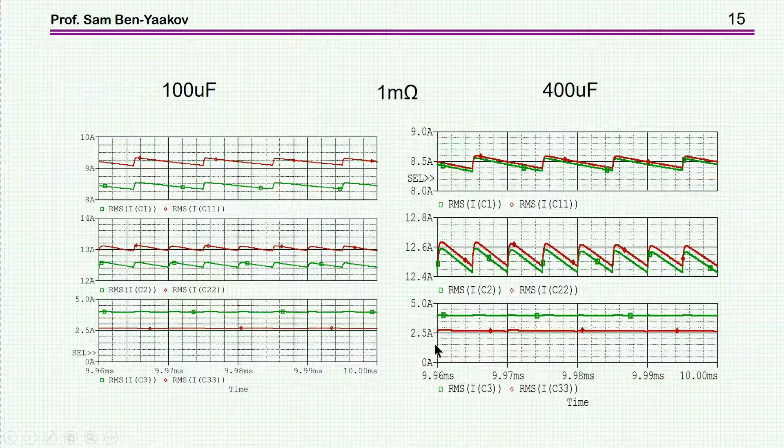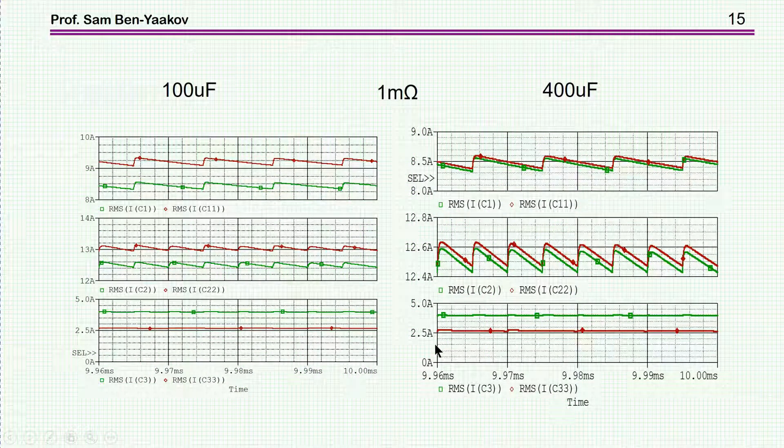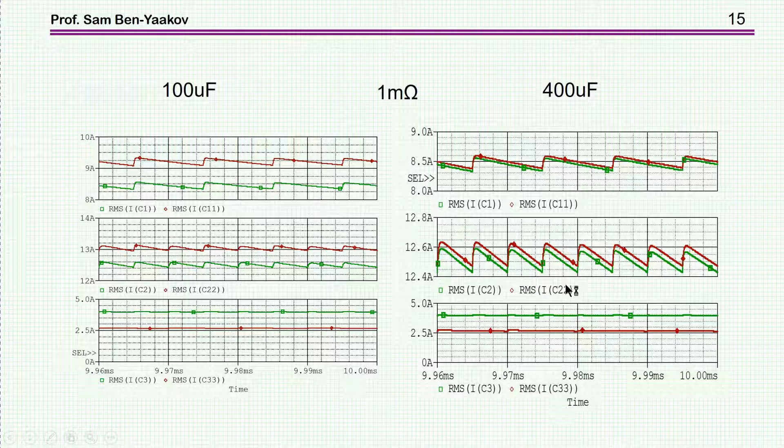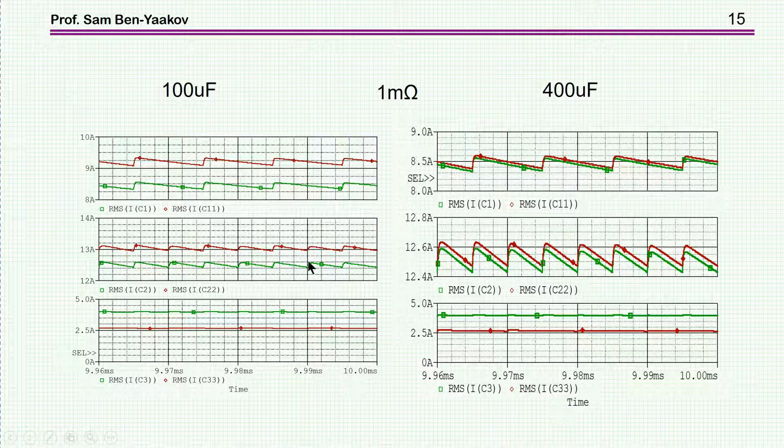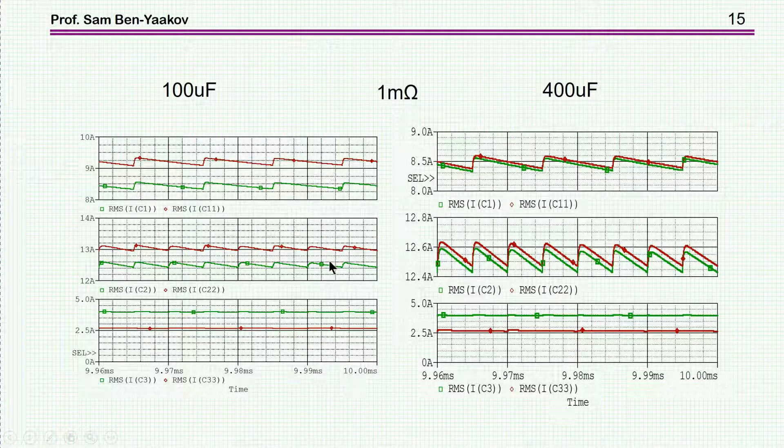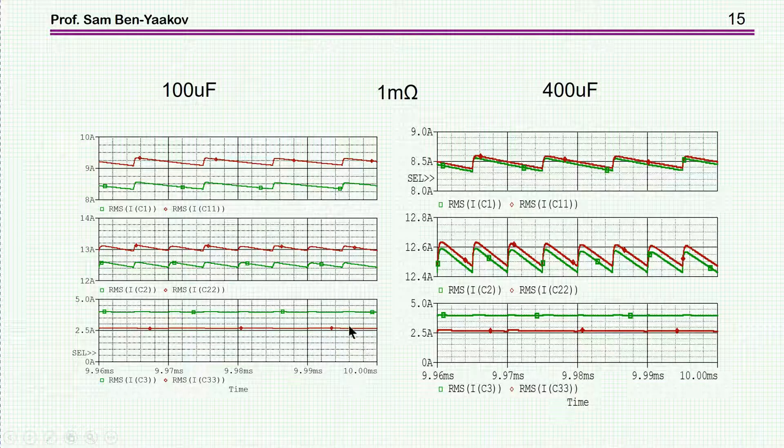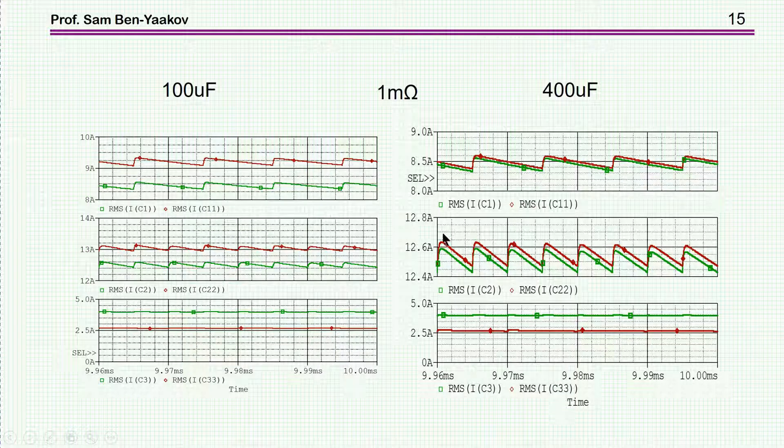So when I compare these side by side, I see that the situation is different for C1, C2, or C22 and C11. This is the output, this is the flying capacitor, and in the 100 microfarad there's a larger difference in here also, and so the ladder would be less efficient. So the losses here will be higher, but here the situation is reversed, and it's also here, and this is why in this case these two will be about the same.